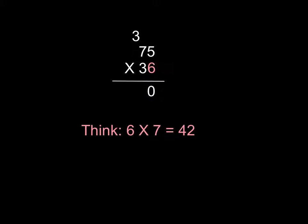And now that we have our first answer, we took care of the six times five. Now we're going to do six times seven. Six times seven is forty-two.